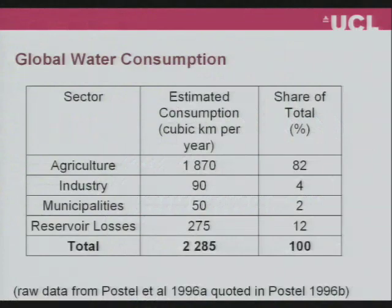Although my talk today is focused on urban water systems, it is important to put it into the context of global water use. About 82% of global water resources are consumed in agriculture. So we should remember that our biggest consumption of water in cities actually comes through the food that we eat and the clothes that we wear. That relatively small amount consumed in cities is incredibly critical because it underpins basic public health.